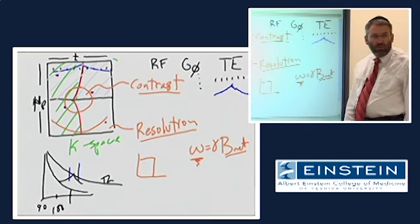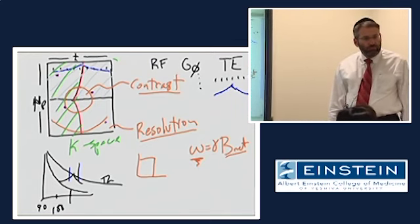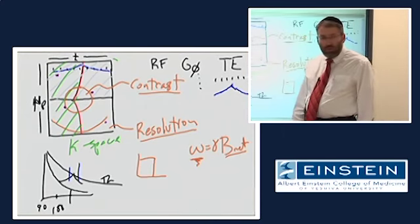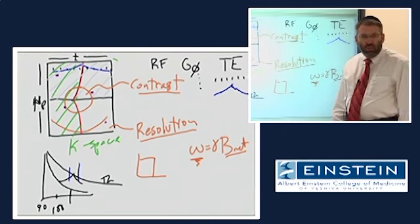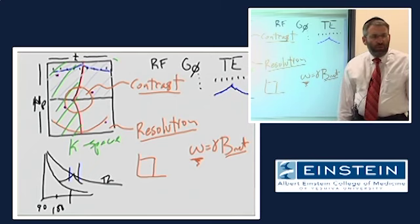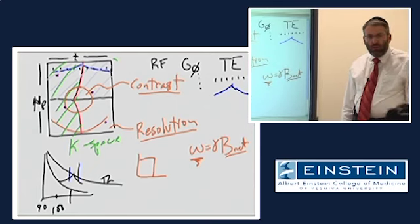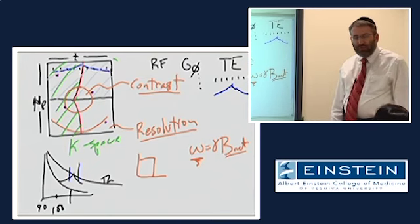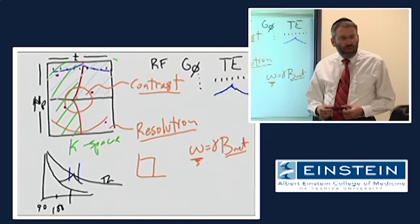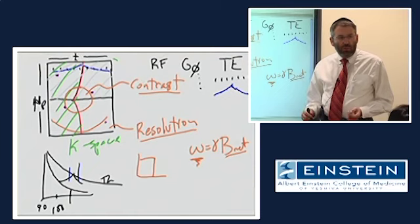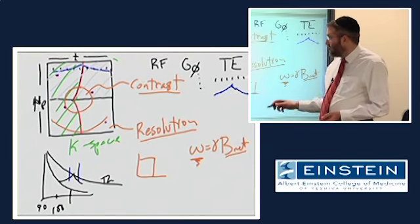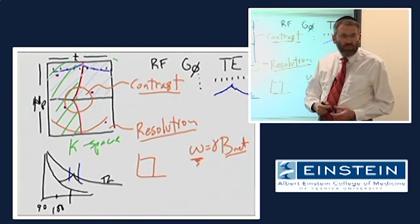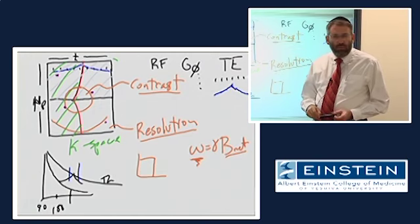A student asks: do we image free induction decay clinically? No — because even when we're not using a spin echo, we're never really looking at a free induction decay. We're always looking at some type of an echo. If it's not a spin echo, it would be something called a gradient echo, which entails an increase and then a decrease in signal amplitude.